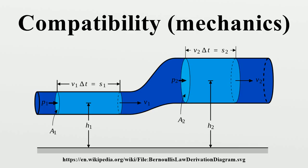For solids in which the deformations are not required to be small, the compatibility conditions take the form of conditions on the deformation gradient. In terms of components with respect to a Cartesian coordinate system, we can write these compatibility relations explicitly. This condition is necessary if the deformation is to be continuous and derived from a mapping. The same condition is also sufficient to ensure compatibility in a simply connected body.